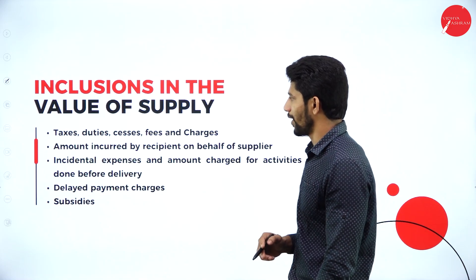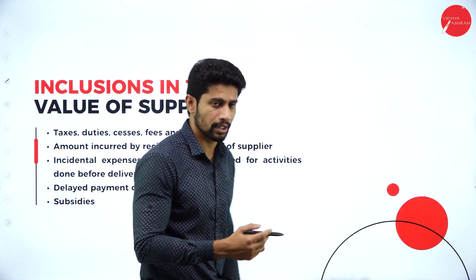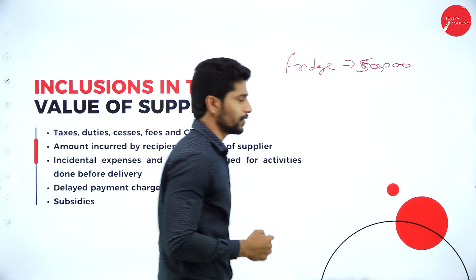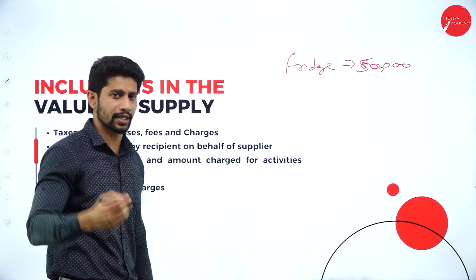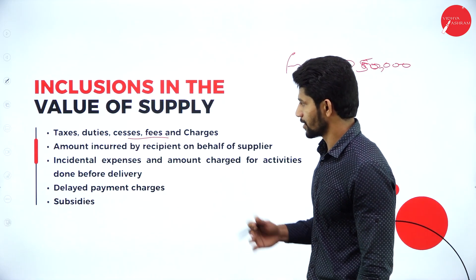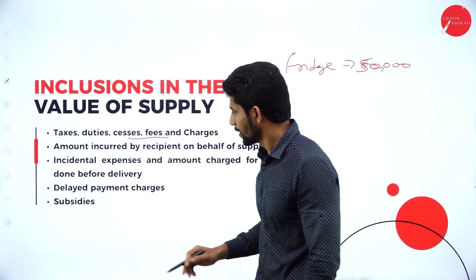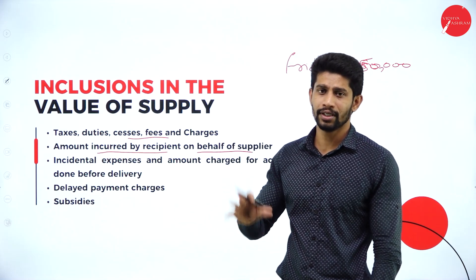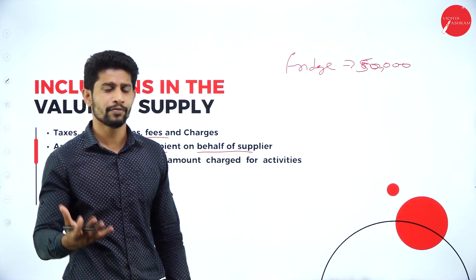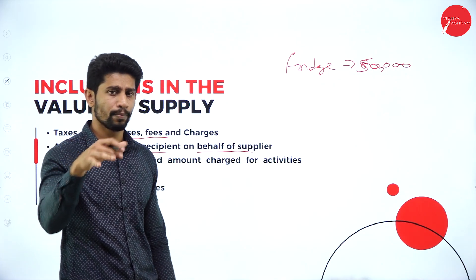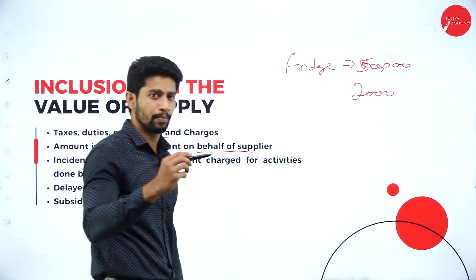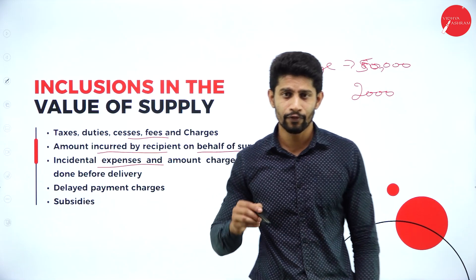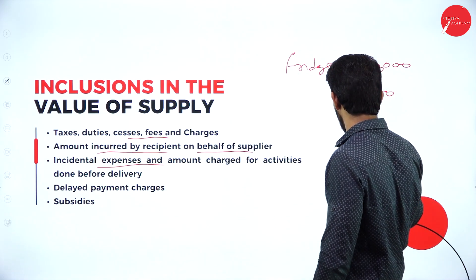Moving to inclusions in the value of supply — what we are going to add to the selling price. For example, fridge at 50,000 rupees. We can include: fees or charges other than GST; amounts incurred by the recipient on behalf of the supplier, such as transportation charges of 2,000 rupees paid on the supplier's behalf; any taxes other than GST; and incidental expenses and amounts charged for activities done before delivery, such as packing charges of 500 rupees.